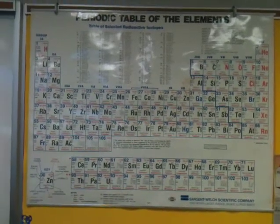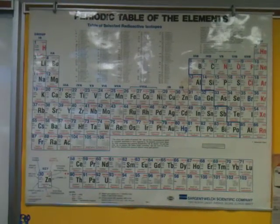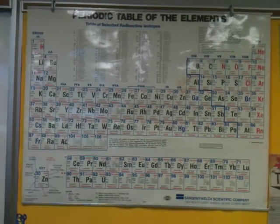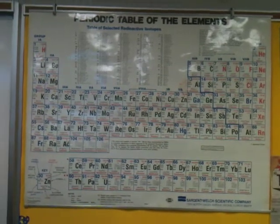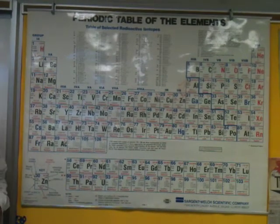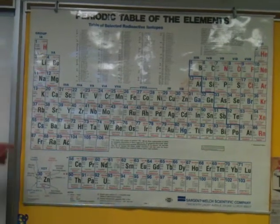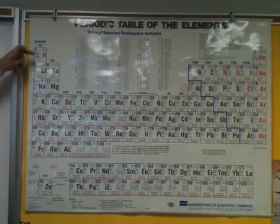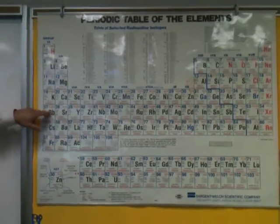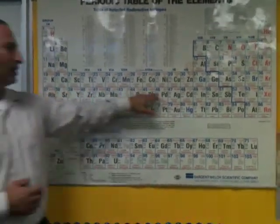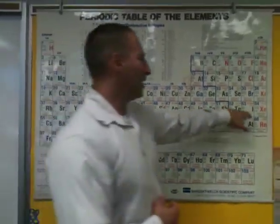So the periodic table, which you have a copy of, and which you will be responsible for memorizing up to period 5 — 1, 2, 3, 4, 5 — all the way across, by Friday.